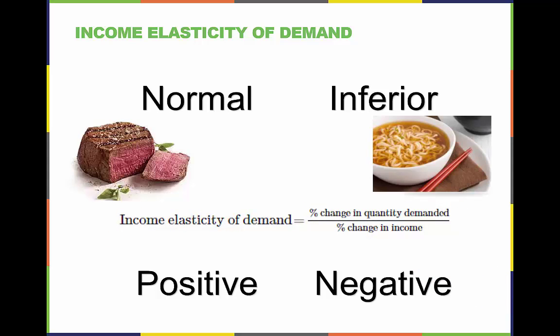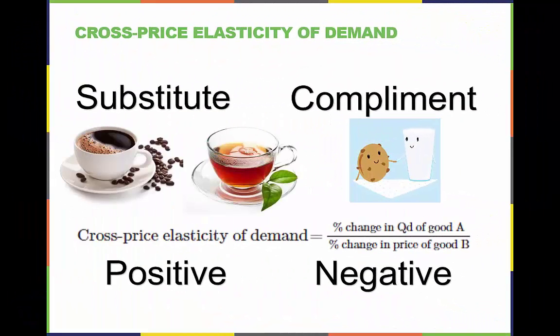Steak might be considered a normal good and ramen noodles might be considered an inferior good, because as our incomes rise we may eat more steak and less ramen noodles, and as our income drops we may eat less steak and more ramen noodles.